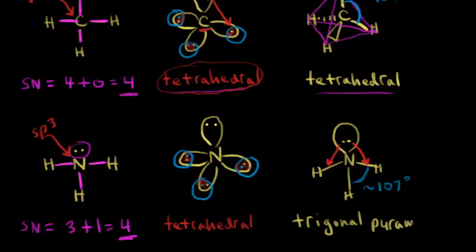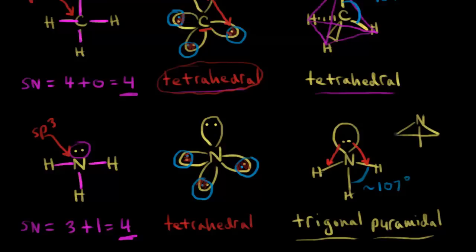In terms of the shape of the molecule, we say trigonal pyramidal. Trigonal refers to the fact that nitrogen is bonded to three hydrogens. The pyramidal part comes in because when you're considering molecular geometry, you ignore lone pairs of electrons — the nitrogen sits at the top of a pyramid bonded to three other atoms. So trigonal pyramidal is the geometry of the ammonia molecule, but the nitrogen is sp3 hybridized.